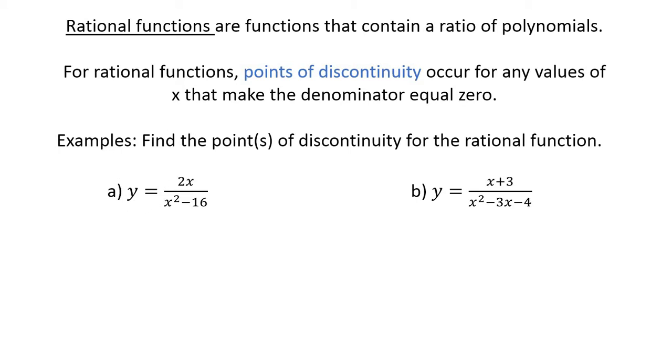Let's find these points of discontinuity. We've got two examples here. The denominator is the key. So if we had y = 2x/(x²-16), let's factor this denominator. That would be (x+4)(x-4). What would make that denominator equal zero? x equals 4 and x equals negative 4. Just set each factor equal to zero and solve. So there are the two points of discontinuity at x equals those two values.